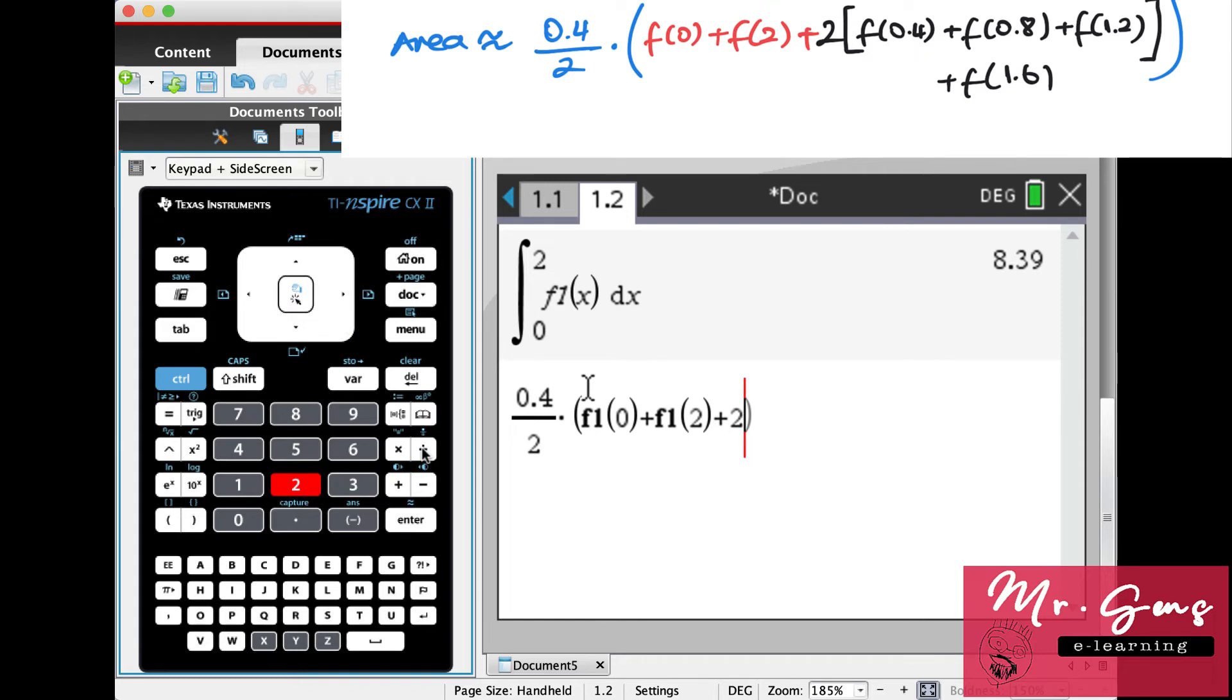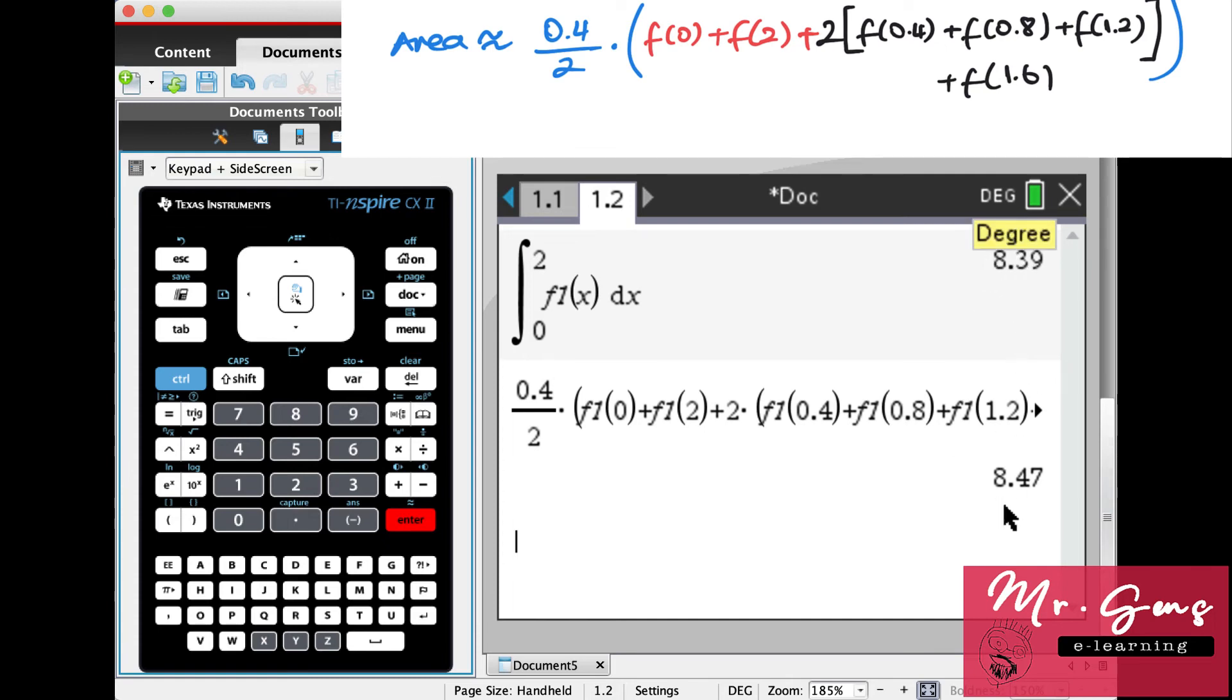And the last one is f1 of 1.6. When you press enter you'll see the result. Since we already calculated the actual area, we can easily compare it—it should be close.